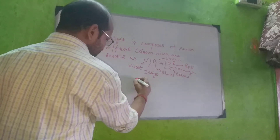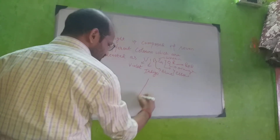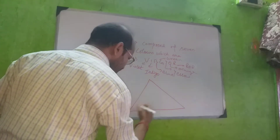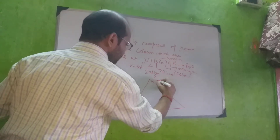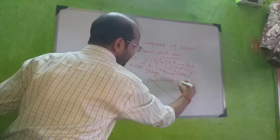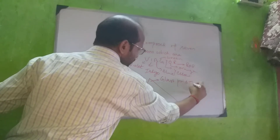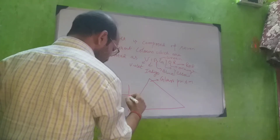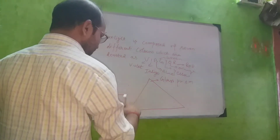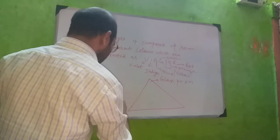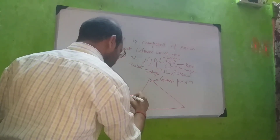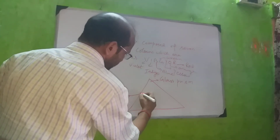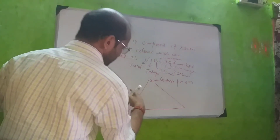Let me show you how it happens with a diagram. We will take a glass prism, and we should take white light which will pass through a slit — a small opening. This white light will come and pass through a small hole or slit.